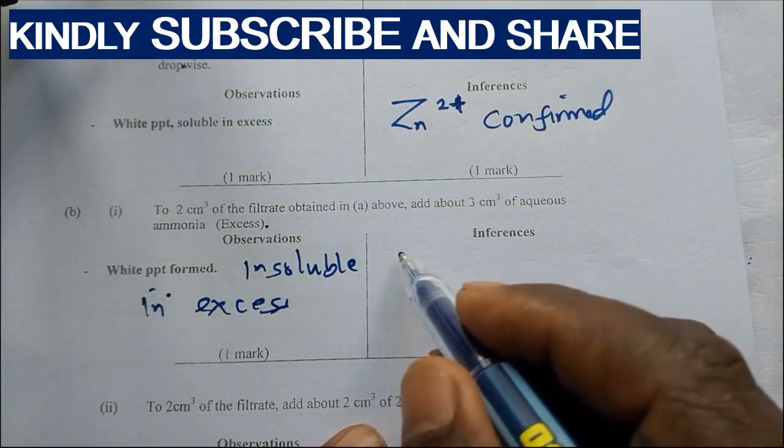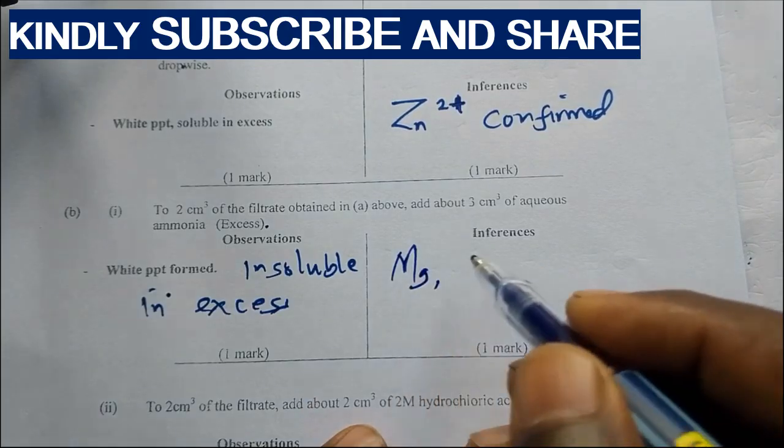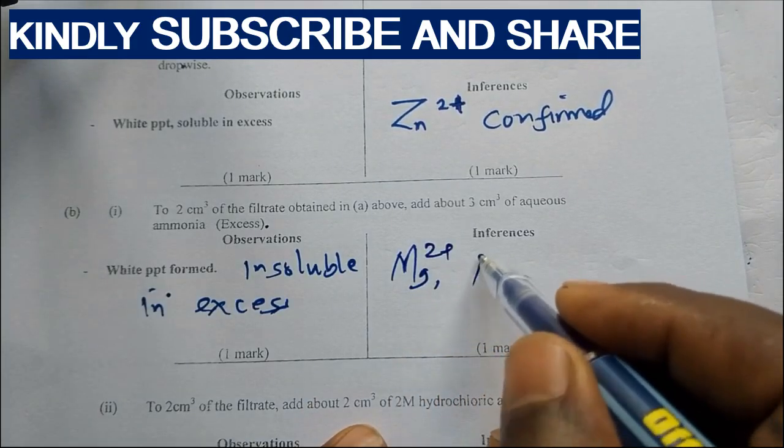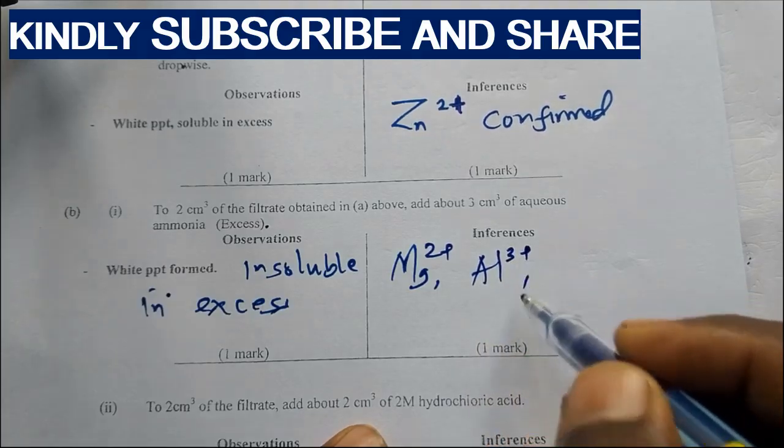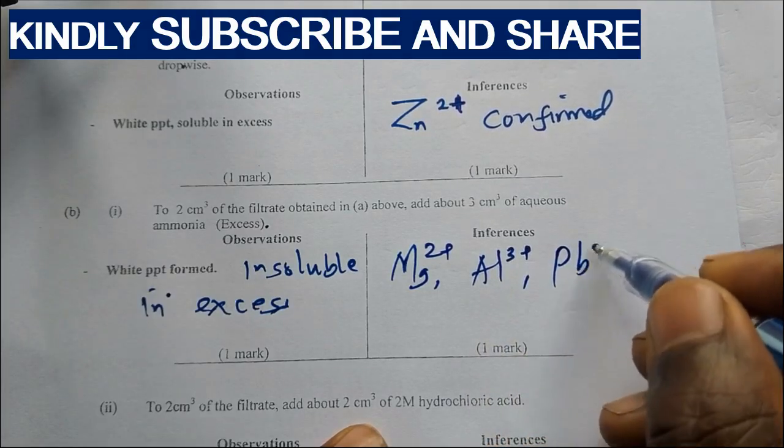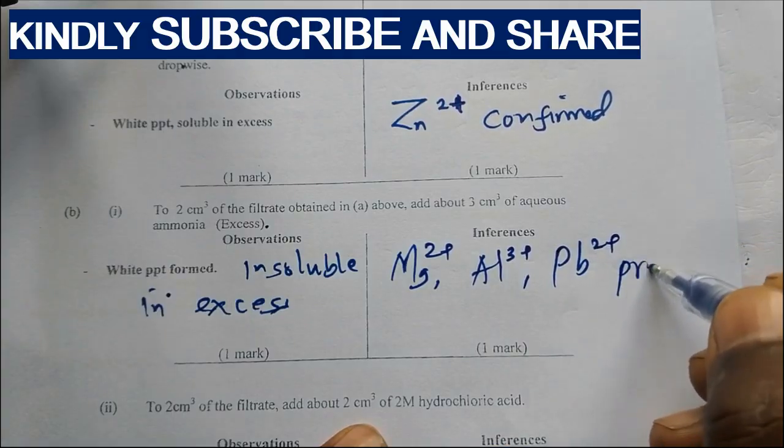If it is insoluble in excess, then what is present is magnesium 2+. We can have aluminum, we can have lead, and are present.